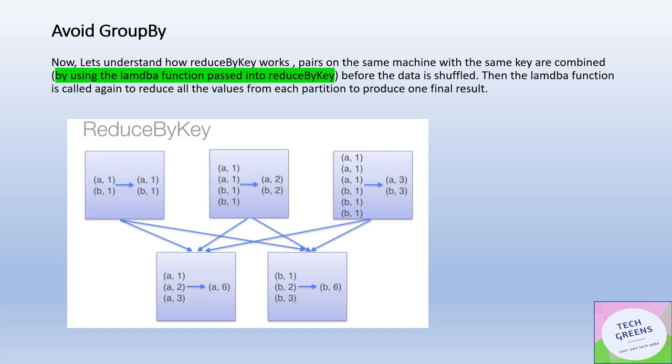If you see, these are the different partitions where I have my key-value pairs persistent. These are the three partitions. How it has worked is that on the same machine, on the same node where for a particular partition, the lambda function that we applied to do the summation of the counts is performed at the partition level.